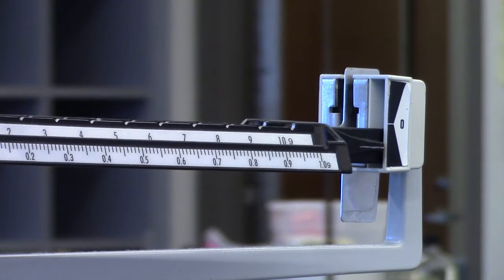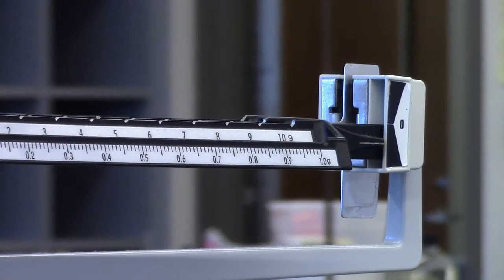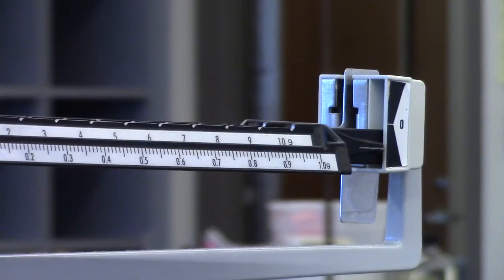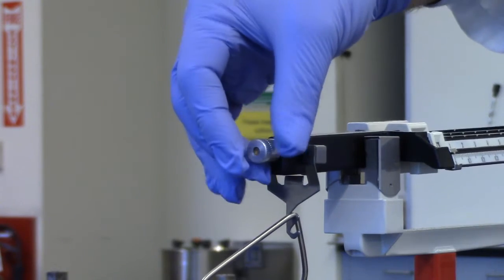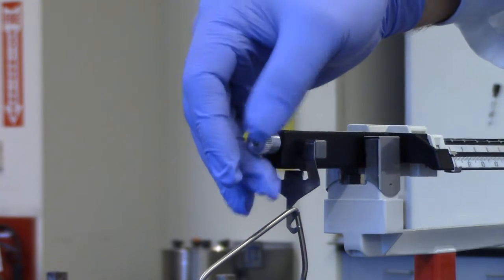Next, the balance must be zeroed. If the pointer is below the zero, it means there is too much mass on the beam, so turn the screw away from you.